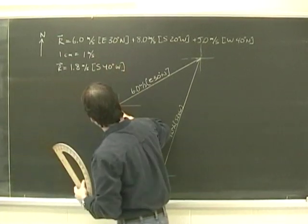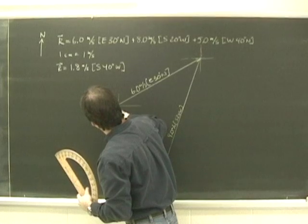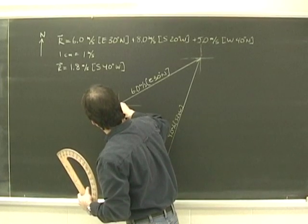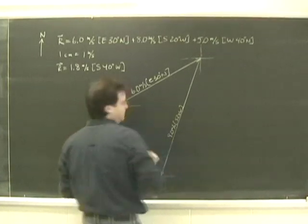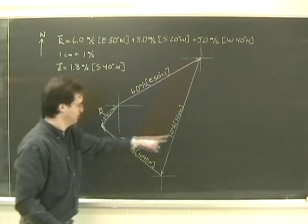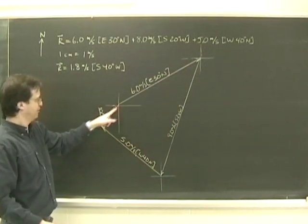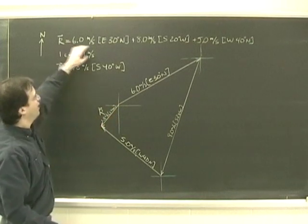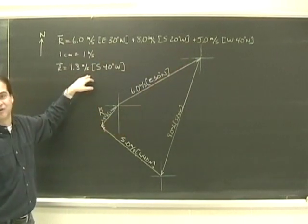And so I label it on here. 1.8 meters per second south 40 west. There we go. You check your vectors. Are they continuous paths? Start to finish. Start to finish. When you add up these three vectors, this is the answer here.